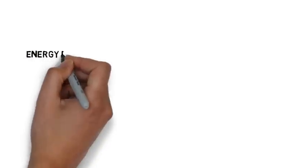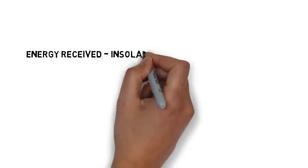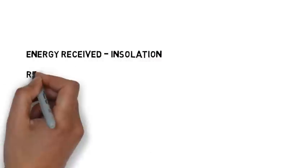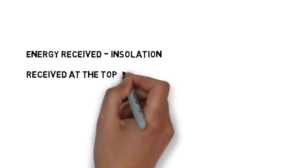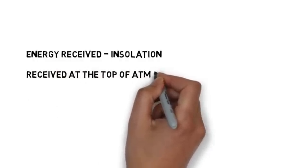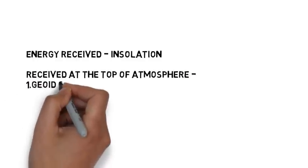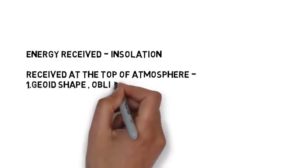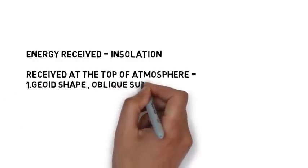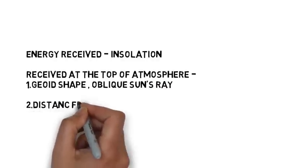We know that earth receives almost all of its energy from the sun. However, this energy varies at two levels: first, energy received at the top of the atmosphere, and second, energy received at the earth's surface. We will learn about the factors in both of these cases.